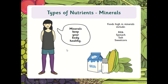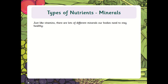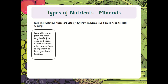There's also something called minerals. Minerals also keep your body healthy and they include things like milk, spinach, salt, and sweet corn. Just like vitamins, there are lots of different minerals our bodies need to stay healthy. Iron comes from red meat, fish, eggs, and beans, as well as many other places. Iron is important to keep your blood healthy — if you don't have enough of this you become tired.